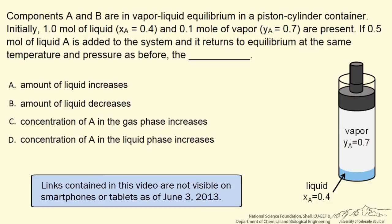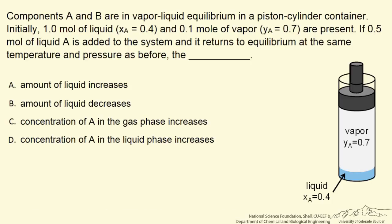We have a piston and cylinder arrangement in which we have both liquid and vapor present. It's a two component system, they're in vapor-liquid equilibrium, and of course the composition of the liquid is different from the composition of the vapor.